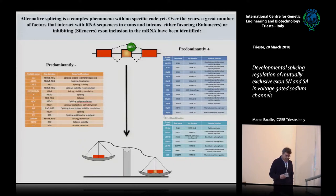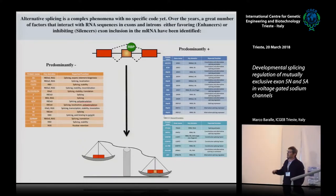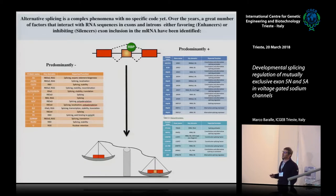I'm being a bit simplistic, but alternative splicing is the inclusion or exclusion of an exon. This inclusion or exclusion is regulated by RNA binding proteins. Here you can see a list of the predominantly negative RNA binding proteins that will cause the exclusion of the exon, and here's a list of the predominant positive splicing factors — RNA binding proteins that enhance the inclusion of the exon.